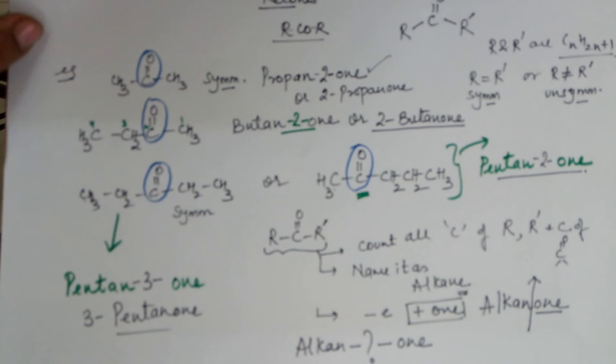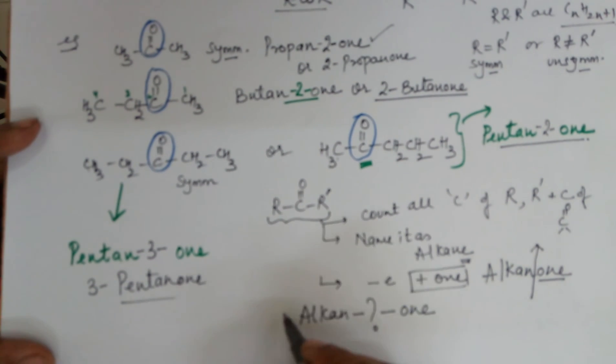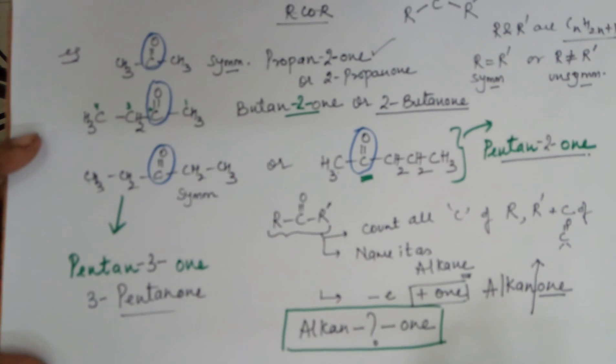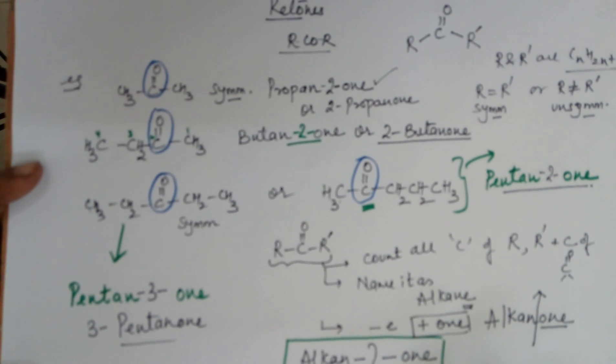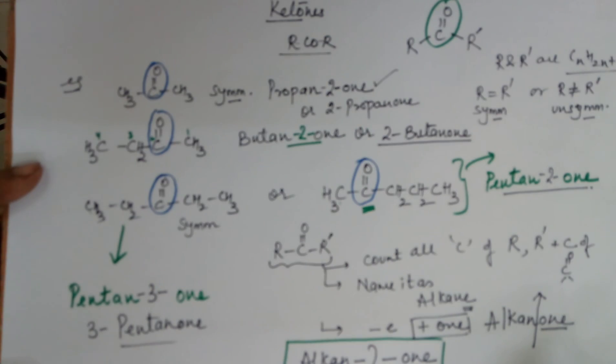The end conclusion of today's class is you need to name a ketone like this. It is an alkane. Remove the E. Add the O-N. The number is definitely to be mentioned because it is not a terminal group. It always comes in between the carbon chains. Since it is coming always in between the carbon chains, you need to mention its position. Thank you.